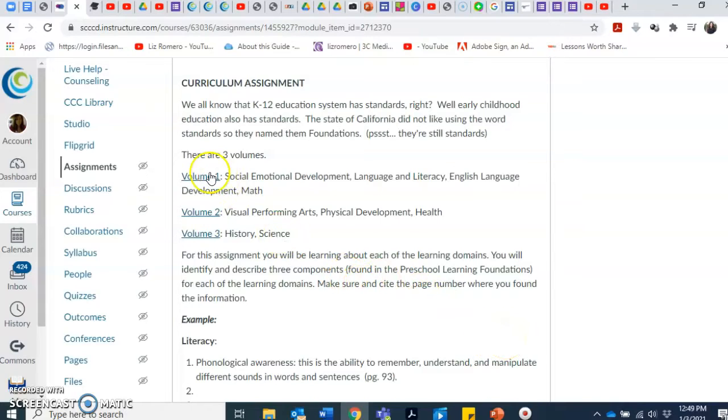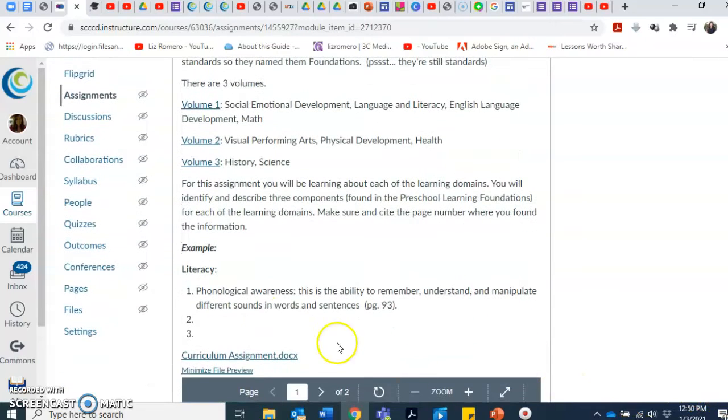For this assignment, there are three volumes of foundations. You can see here where it's listed under each one. Volume 1 has social emotional development, language and literacy, English language development, and then math. The second volume has visual performing arts, physical development, and health. Volume 3 has history and science.